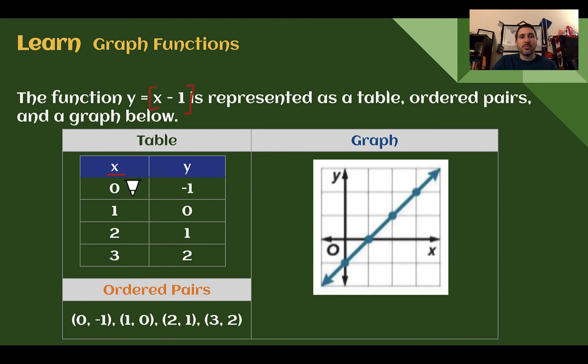From this function table, we can then make coordinates or ordered pairs. Zero, negative one, put them together as an ordered pair. We can see those down here. Here's one, zero, two, one, three, two. Once we have our ordered pairs, then we can plot them. We have zero, negative one, right there. One, zero is right there. Two and one, and three, two.